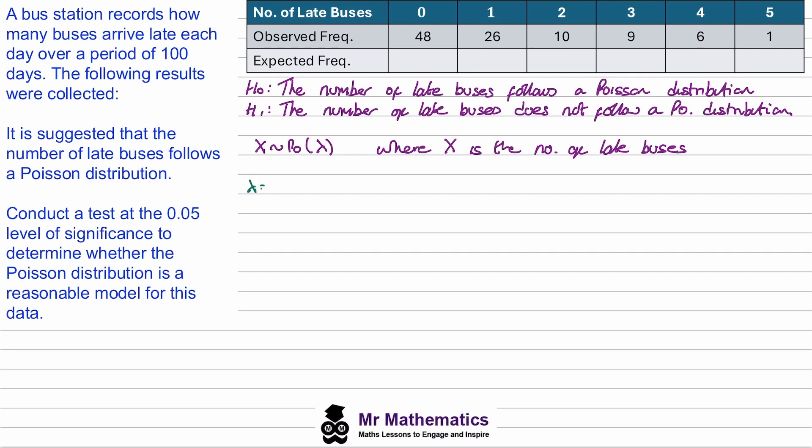So lambda will be 0 lots of 48, plus 1 lot of 26, plus 2 lots of 10, 3 lots of 9, 4 lots of 6, and 5 lots of 1. We're just going to multiply each of these together and then divide by the 100. And then we divide all of this by the 100. We can work this out and we get lambda is 1.02.